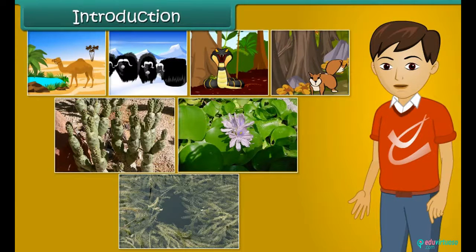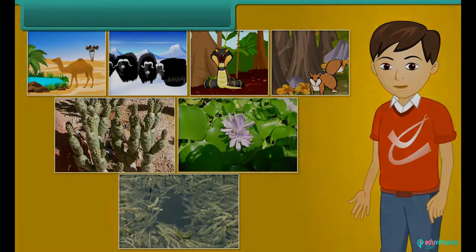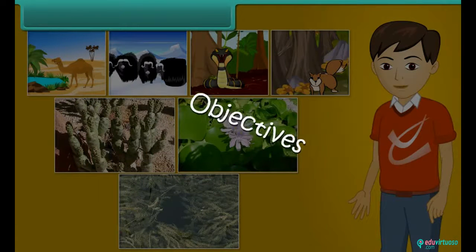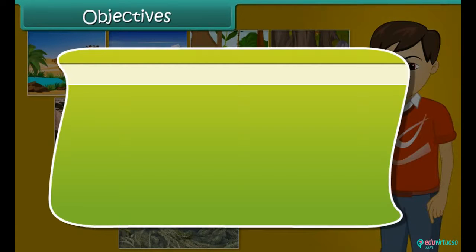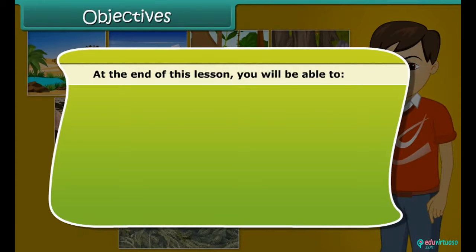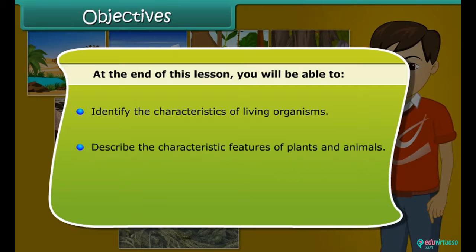All plants and animals develop different features that help them to survive in their surroundings. Let us learn more about the living organisms and their surroundings. At the end of this lesson, you will be able to identify the characteristics of living organisms and describe the characteristic features of plants and animals.